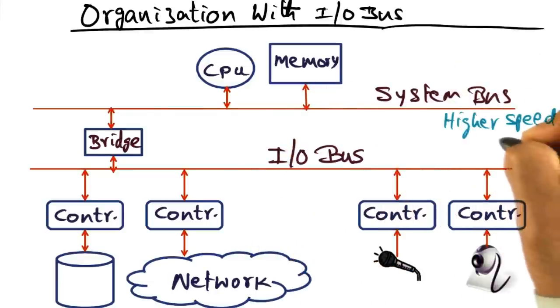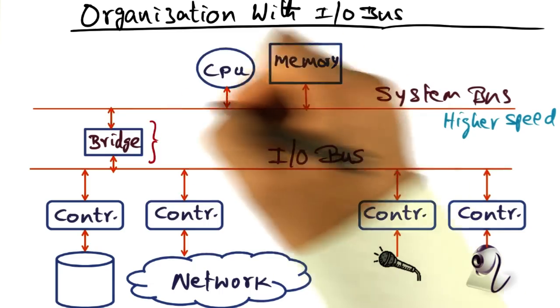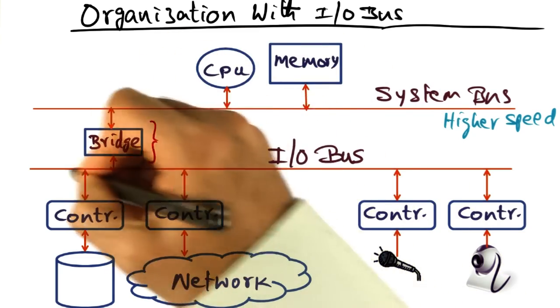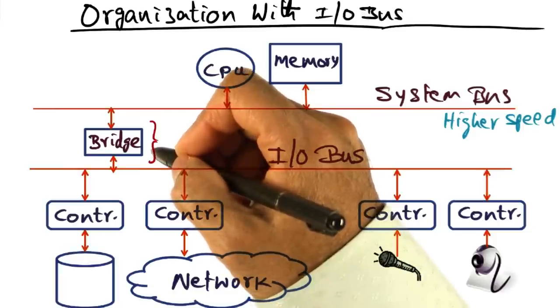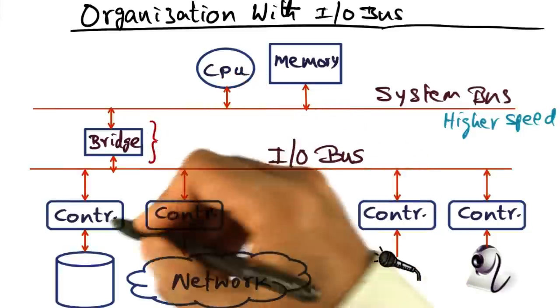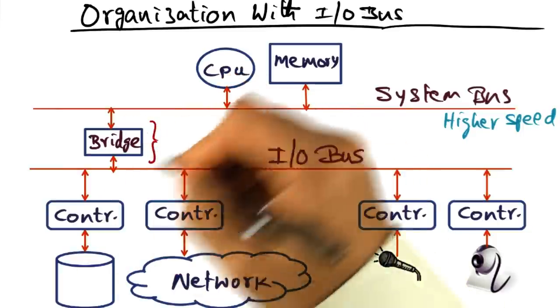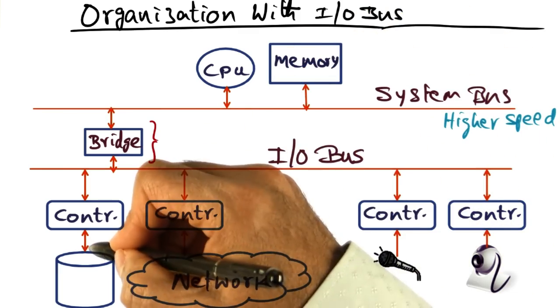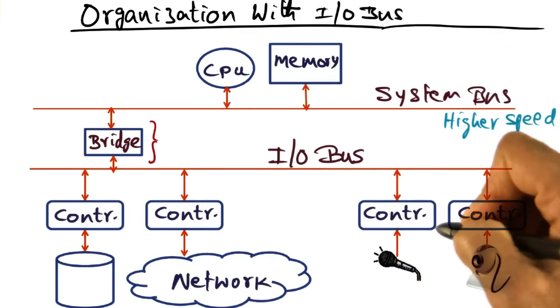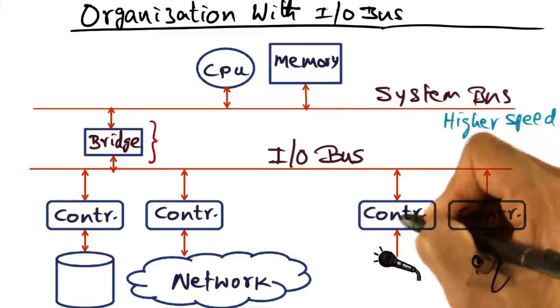So the system bus is a high speed bus, and it connects via a bridge to the IO bus. And the bridge itself could be a specialized IO processor for scheduling the devices that need to communicate with the memory, for instance, if it is a DMA device, or need to communicate with the CPU if it's a slow speed device.